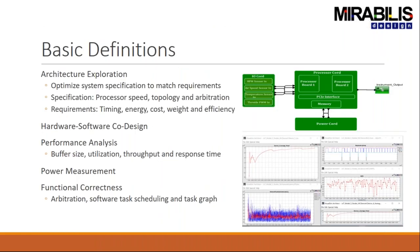Some basic definitions. Architecture exploration: we can perform the architectural analysis of algorithms and software in order to optimize specifications such as system speed, arbitrations, topology, and to meet certain requirements. Those requirements may include timing, cost of communication, and efficiency of the system.